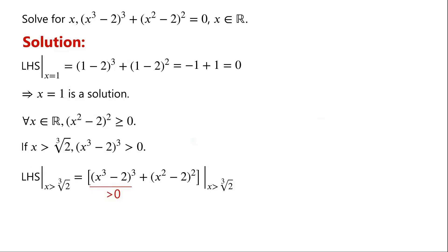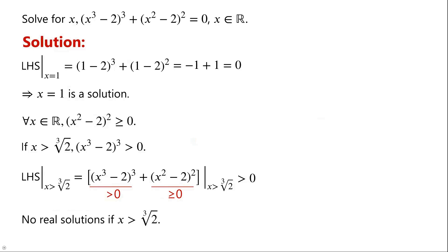x cubed minus 2, all cubed, is greater than 0, and x squared minus 2, all squared, is greater than or equal to 0. So the left-hand side of the equation is greater than 0. Hence, there are no real solutions when x is greater than the cube root of 2.